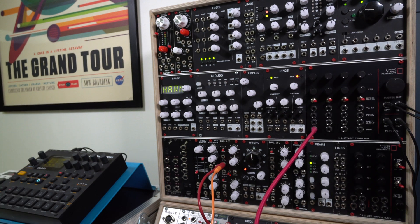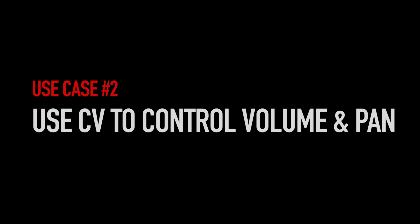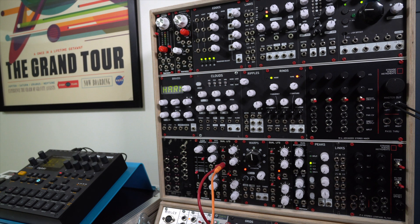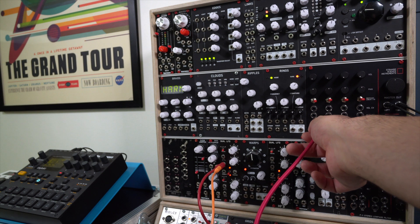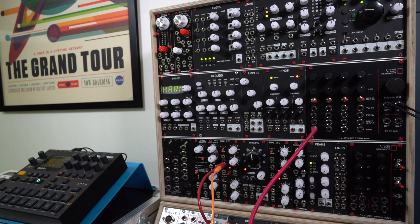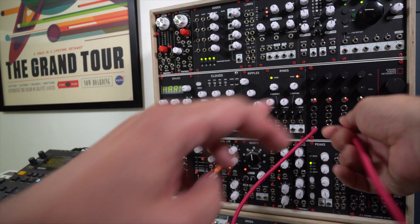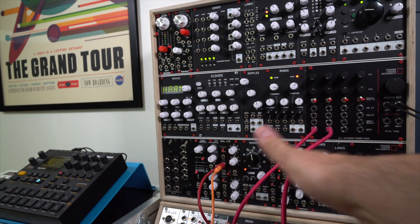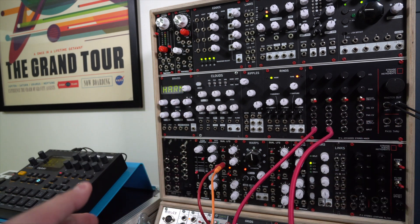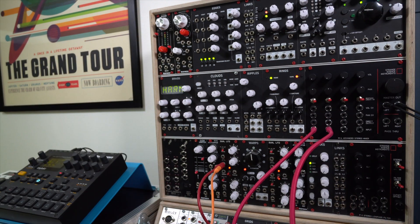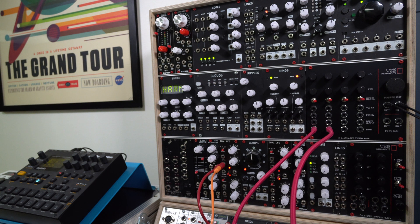The second use case is a lot like the first one. I'm going to plug an oscillator into channel one, and the same oscillator has a different output, so let's use a triangle wave and bring that in on channel two. So far it's exactly the same as the first example, except this is where things start to get interesting with the M4 — because the volume and pan are both CV controllable on this mixer.